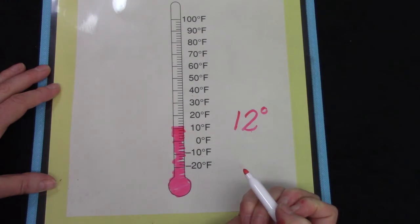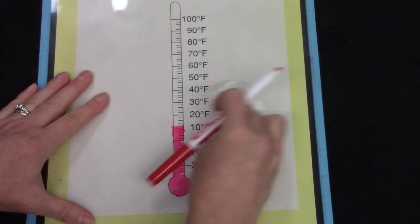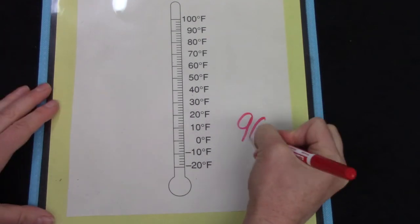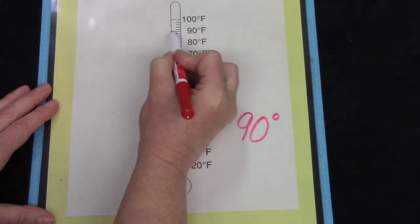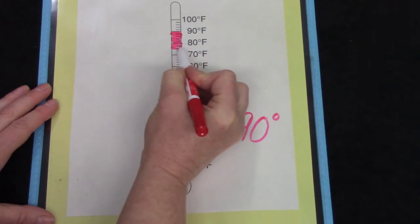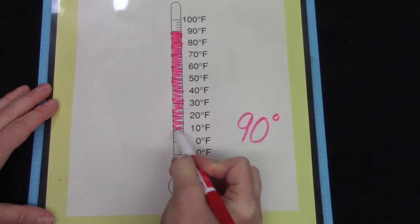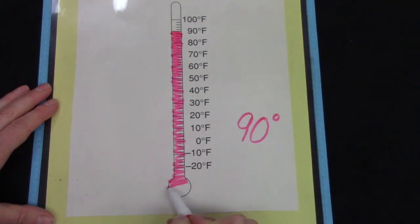How about a warmer temperature? Let's go all the way to 90 degrees. Well, that's easy. It's a multiple of 10. So I don't even have to count any extra. There we are. All the way to 90 degrees.